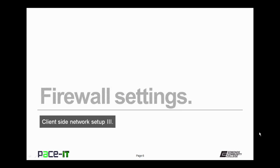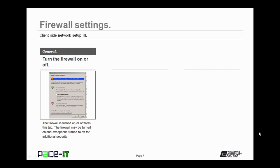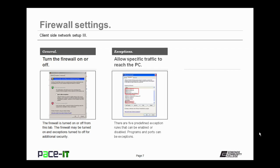Now let's discuss firewall settings, beginning with Windows XP firewall. Windows XP's firewall gives you three tabs. There's the general tab, where you can turn the firewall on and also allow or disallow exceptions. The exceptions tab allows specific traffic to reach or leave the PC. There are five predefined exception rules that can be enabled or disabled from here, and programs and ports can be exceptions.